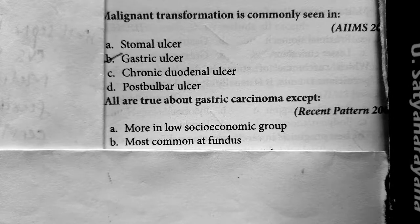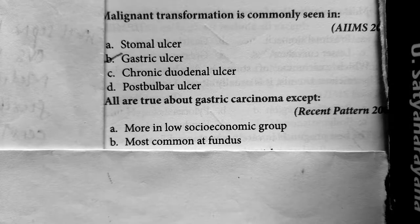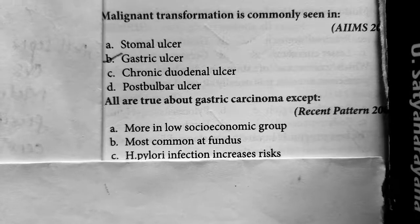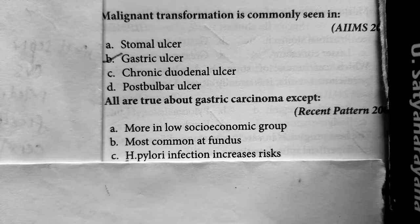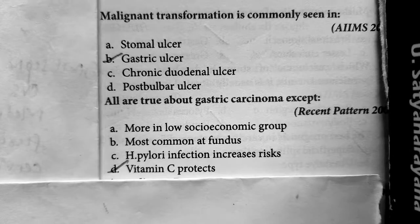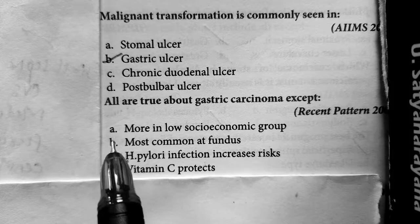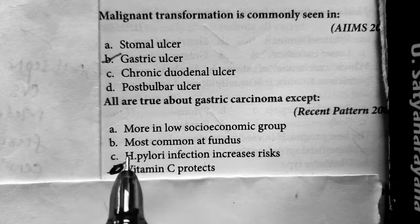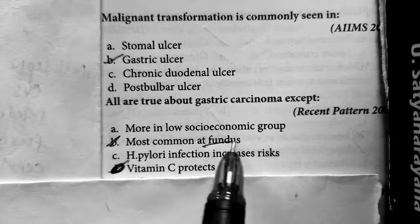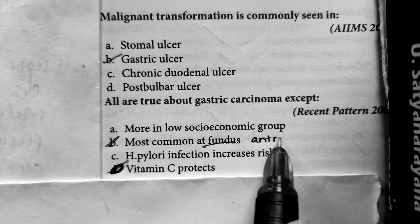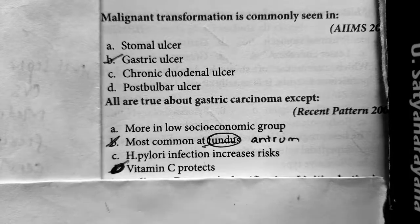If gastric carcinoma is associated with pernicious anemia, then it is common at the fundus of the stomach. But normally, it is most common at the antrum of the stomach. H. pylori increases the risk of gastric carcinoma — true. Vitamin C protects against gastric carcinoma — also true. So gastric carcinoma is NOT common in the fundus; it is common in the antrum.